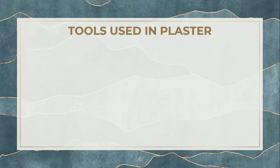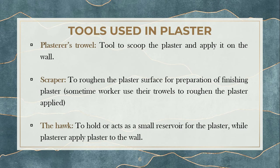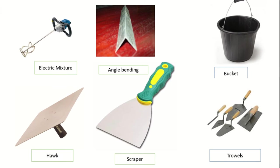Coming to the tools — for plastering, what kinds of tools do we generally use? There are around six important tools. The first one is the plasterer's trowel. This tool is used to scoop the plaster and apply it onto the wall. The person will mix the plaster or mortar in a pan, then take the trowel, insert it into the pan containing the plaster, and then place it on the wall.